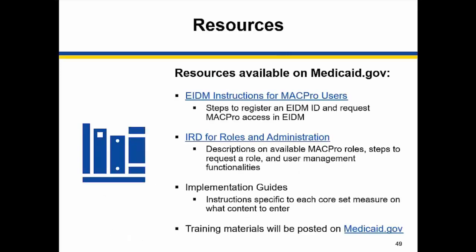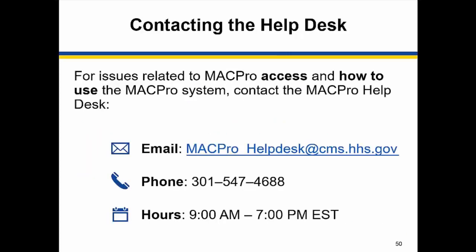Users can find additional MACPro resources on Medicaid.gov. The links on this slide lead to several helpful instructions and reference documents. You may also want to contact the MACPro Help Desk for issues related to MACPro access or the MACPro system. You can reach the Help Desk via email at macpro-helpdesk@cms.hhs.gov or via phone at 301-547-4688. The Help Desk is available Monday through Friday from 9 a.m. to 7 p.m. Eastern Standard Time.